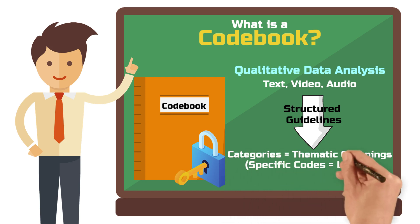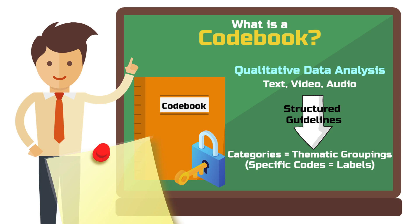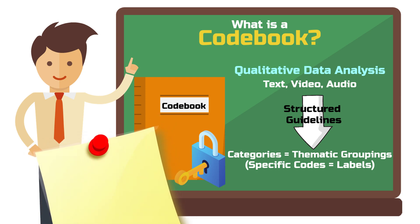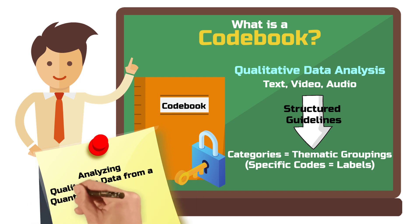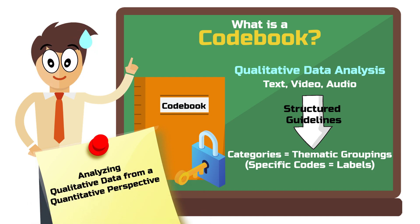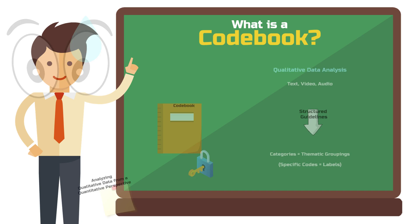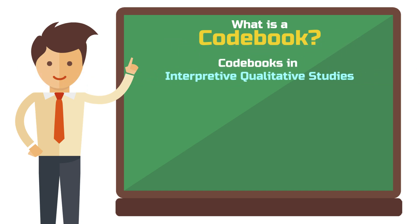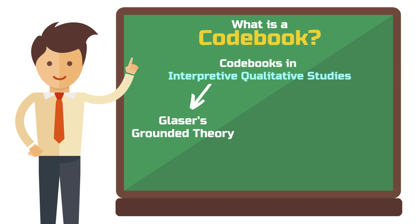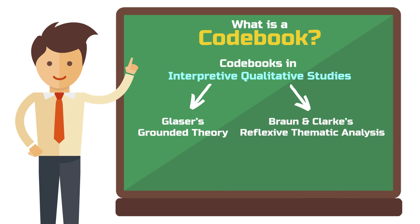Each category or theme consists of specific codes which serve as labels for classification. Using a codebook is more common in research projects that analyze qualitative data but do so from a more quantitative perspective. In hardcore interpretive qualitative studies, for example when using grounded theory or reflexive thematic analysis, a codebook can also be used but its purpose here is a little different.